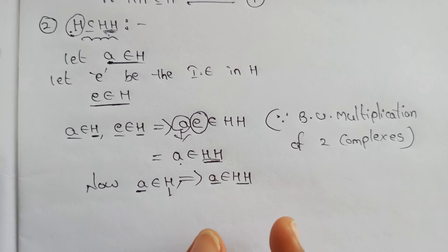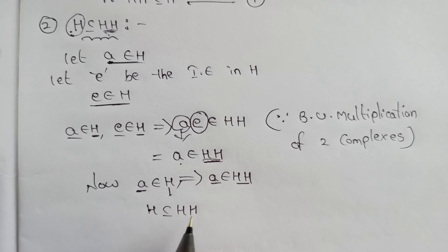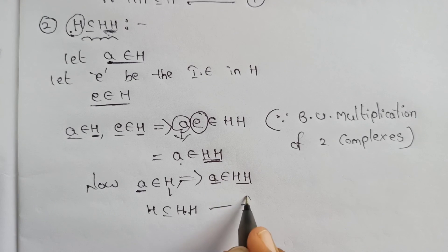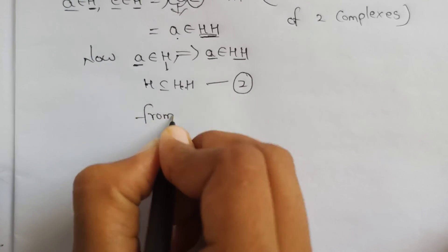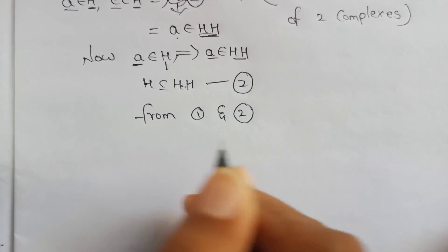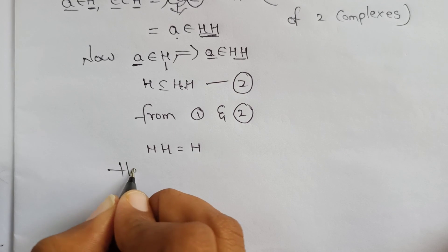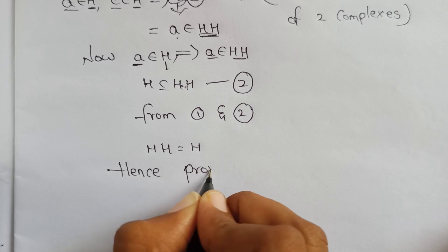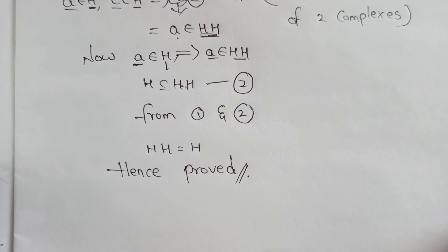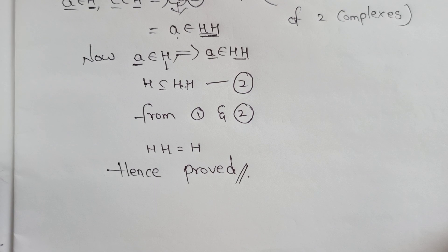So from (1) and (2), H·H is equal to H. H is a subset of H·H and H·H is a subset of H, therefore H·H equals H. If you like this video, please like, share, and subscribe to our channel, and leave a comment. Thanks for watching.